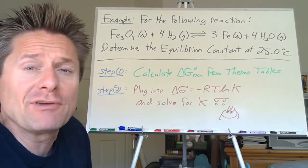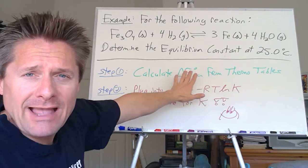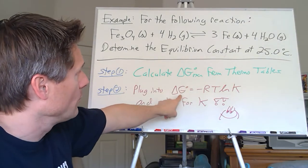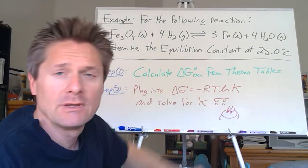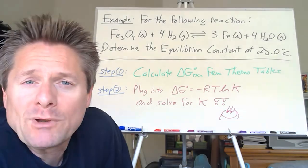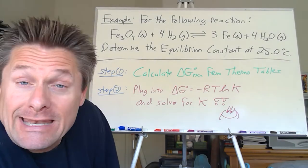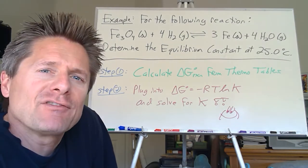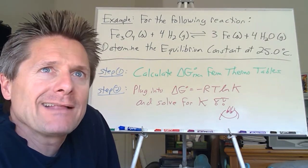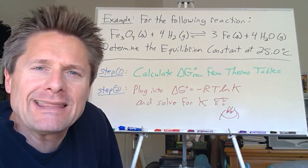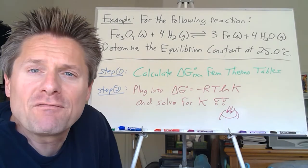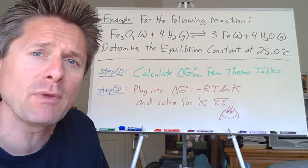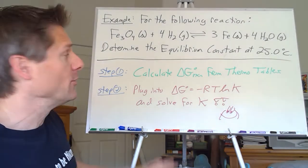If you know the steps it doesn't matter — I can give you thousands of different types of problems, it's the same thing every time. Step one: use thermodynamic tables to calculate the standard Gibbs free energy change for that reaction at 25.0°C. Step two: we know R and the temperature, so isolate and solve for ln K, then take e to that power to get the equilibrium constant. We'll also look at what it means qualitatively.